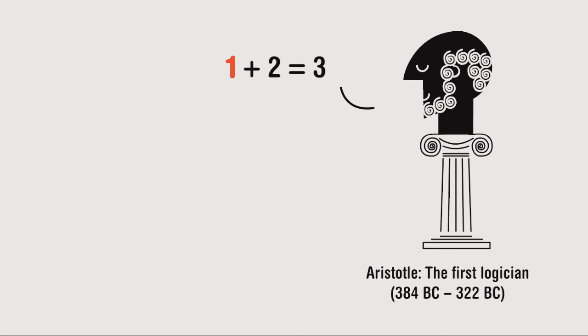On one side of the equation we have things we already know or agree upon. On the other side is an answer that's true so long as the numbers on the other side don't change.